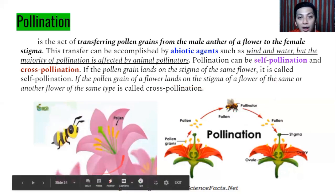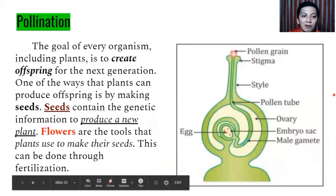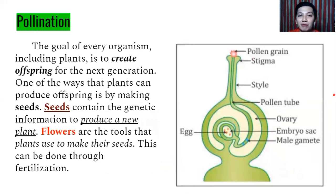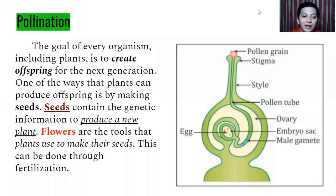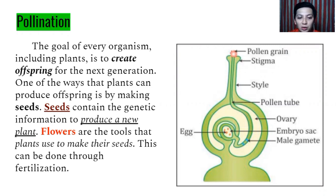Self-pollination and cross-pollination can be seen in examples here. The goal of every organism, including plants, is to create offspring for the next generation to survive. One of the ways plants produce offspring is by making seeds. Seeds contain the genetic information to produce a new plant, and flowers are the tools that plants use to make their seeds.